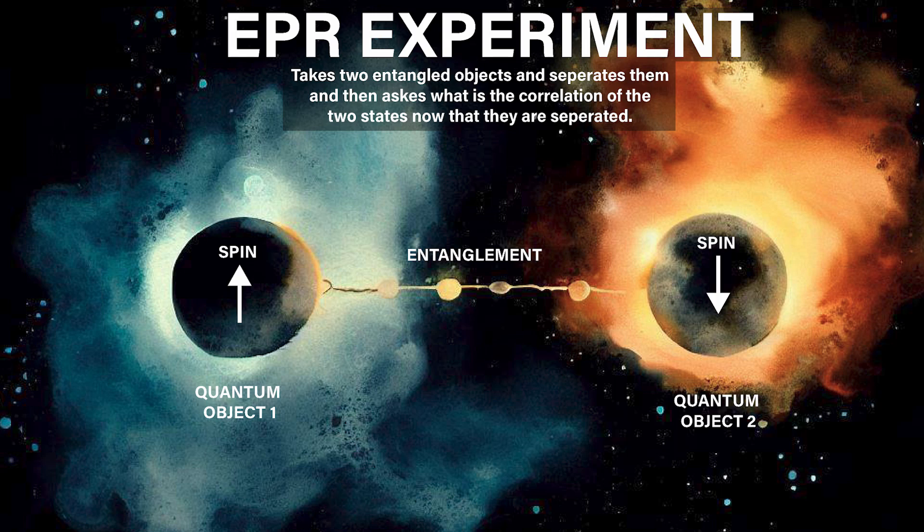In quantum mechanics, we often describe an object as having a superposition of two states — spin up or spin down. If we take two electrons and let them interact, they can become entangled. This entanglement leads to a correlation of the spins, so that if we measure one spin to be up, then the other will be in the spin down state. If after they interact we took the electrons far away from each other, they would still have this property — one would be spin up while the other would be spin down.